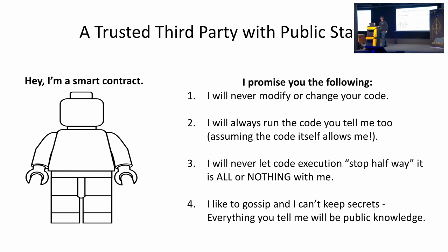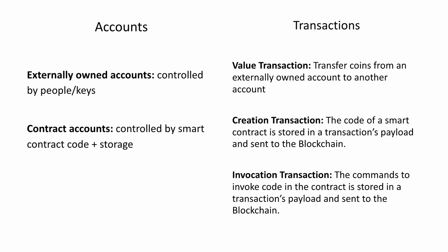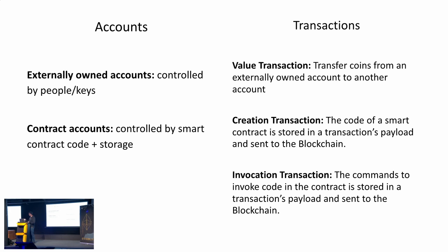You call the vote function and it either completes or it reverts and you lose your money on the gas fees. So you have to make sure your code guarantees the function will always complete. Also — and this is not a secret — everything is public on this network. A smart contract likes to gossip. If you put your date of birth on the blockchain, everyone can see it. On Ethereum you have accounts and transactions: externally owned accounts like MetaMask, and contract accounts which have storage and code.